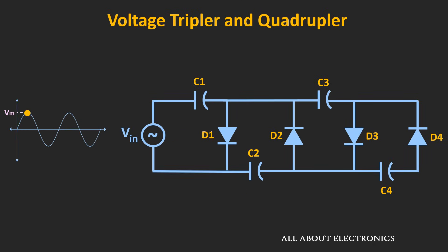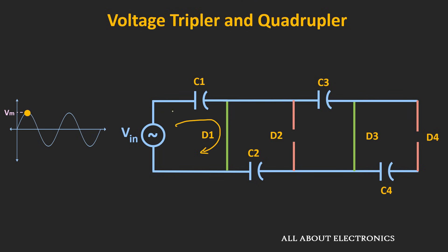Now let's understand the working of this circuit. Initially, all capacitors are uncharged. During the positive half cycle, diodes D1 and D3 conduct while D2 and D4 remain off, because the anodes of D1 and D3 are more positive than their cathodes. Replacing the diodes by their equivalents, D1 and D3 act as short circuits and D2 and D4 act as open circuits. As both capacitors are uncharged, capacitor C1 gets charged up to the peak voltage Vm during the positive half cycle.